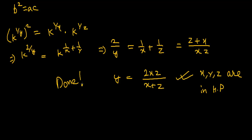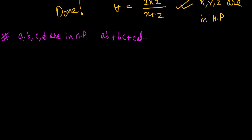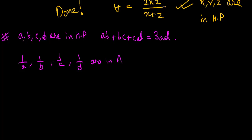The next question says a, b, c, d are in HP and we need to show that ab + bc + cd equals 3ad. Since a, b, c, d are in HP, we can say that 1/a, 1/b, 1/c, 1/d are in AP.